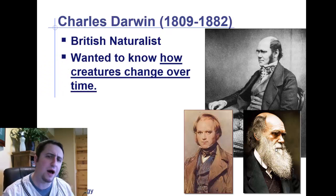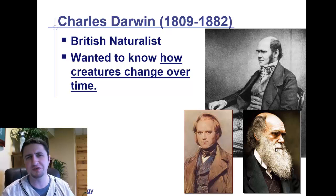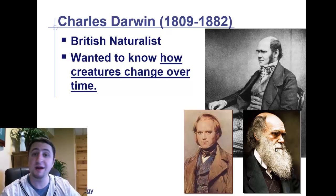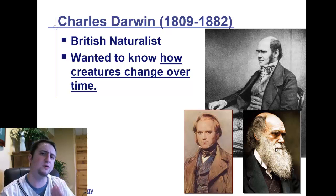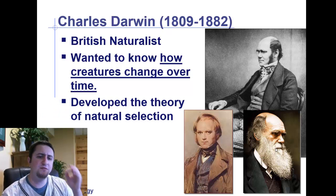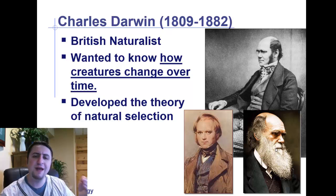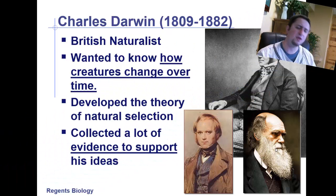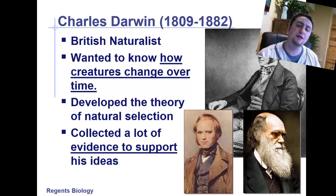He sort of wanted to know how creatures change over time. It's pretty obvious that there are some differences between what creatures look like when the dinosaurs were around, for example, and what they look like today. So he kind of wanted to know how does that all happen. So he developed his theory of natural selection, which has grown to become one of the most accepted theories in all of science. On his voyage, which we'll talk about in a second, he collected a lot of evidence to support his theory.